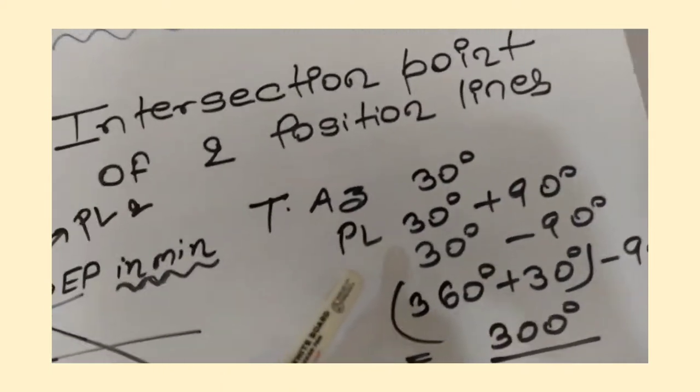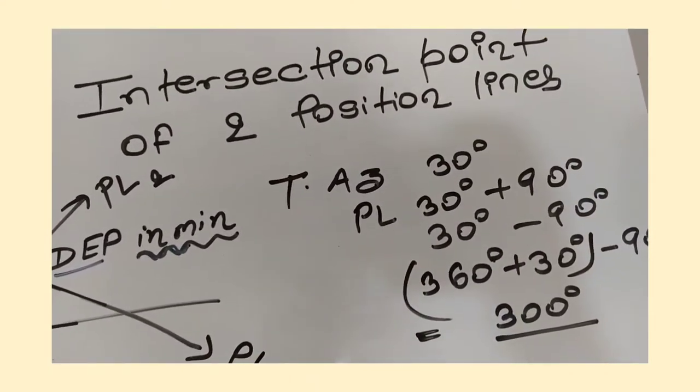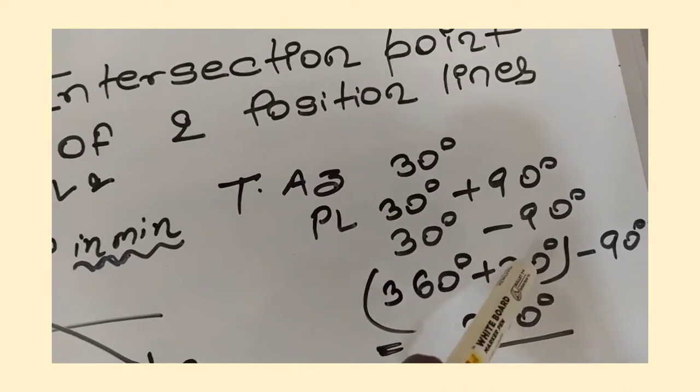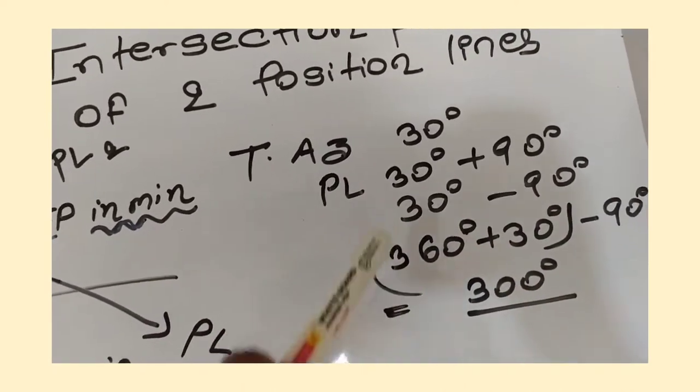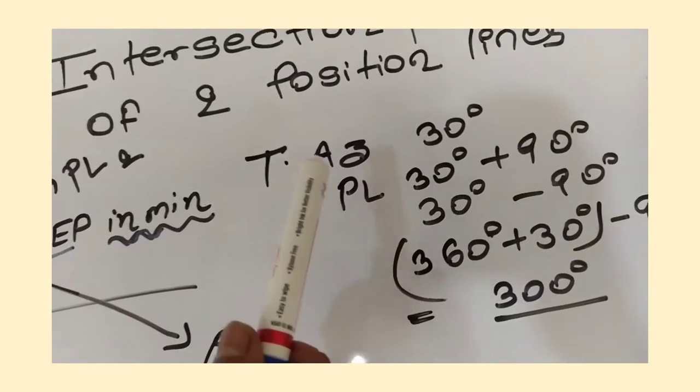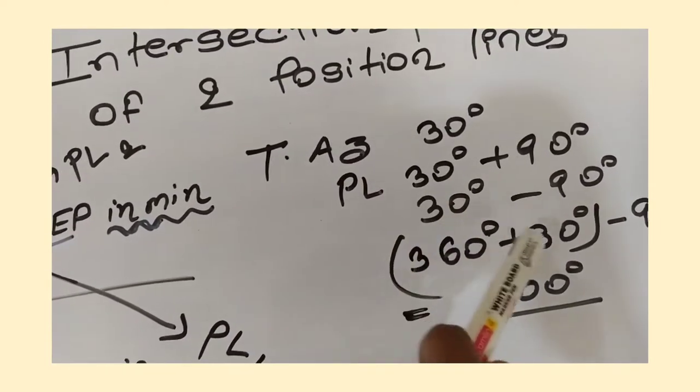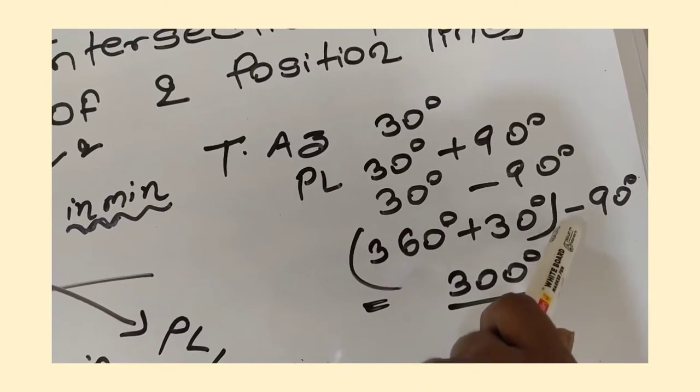So this is the fix. For example, if your true azimuth was given in the question as 30 degrees, then PL will be 30 degrees plus 90 degrees and 30 degrees minus 90 degrees. There is a point to be noticed: 30 degrees minus 90 degrees will give you minus 60. So it's better to add 360 degrees to this 30 degrees and then do the subtraction.